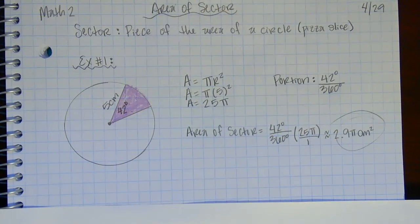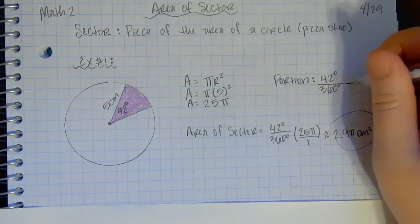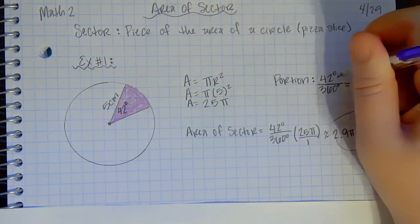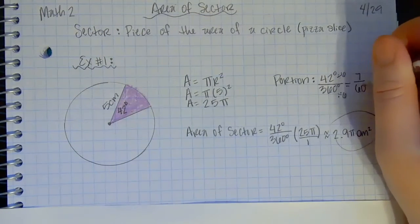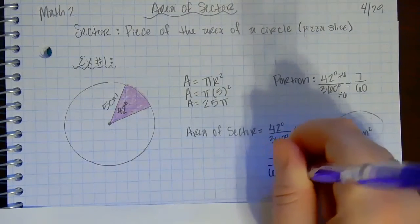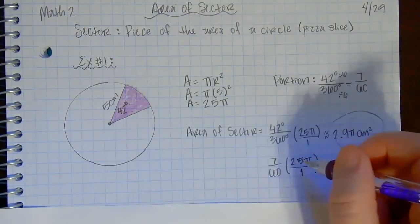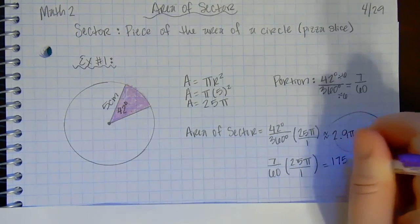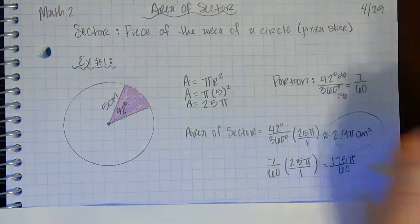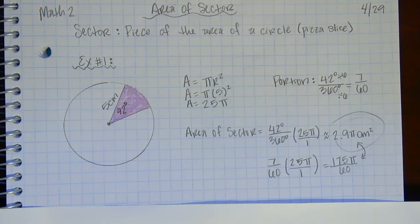If I wanted to leave it as a whole number and not convert to a decimal, I can simplify. 42 out of 360 simplifies by dividing top and bottom by 6: 42 ÷ 6 = 7, and 360 ÷ 6 = 60, giving 7/60. So I could also do 7/60 times 25π, then multiply straight across: 7 times 25 gives 175π over 60. These are the same answer — one is a decimal and one is a fraction; either is fine.